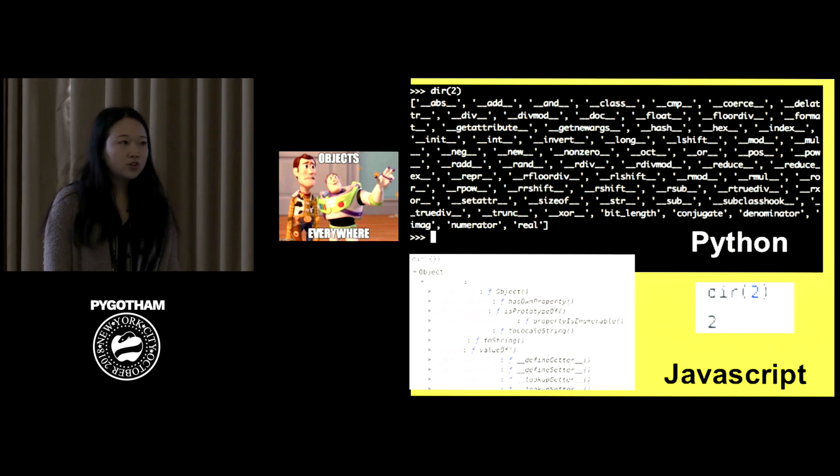So the first thing to keep in mind throughout this entire presentation is that everything in Python is an object, even integers and strings. That's why if you use a dir method on a number like two, you'll get these properties associated with it like you see on the top. If I did the same thing in another language like JavaScript, you can see I'm not getting anything back. I'll only get something back like a list of properties if I check an object.